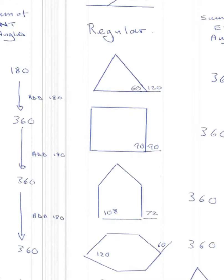Looking at the internal angles, we start with a triangle at 180. Then every time we add a side, we add 180 degrees. So four-sided shapes are 360, pentagons five-sided go up to 540, hexagons 720.